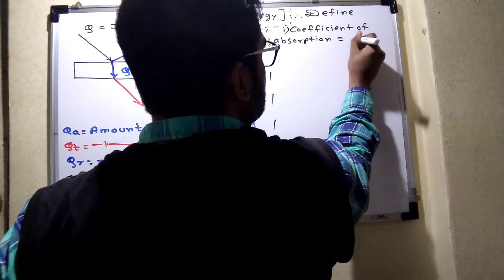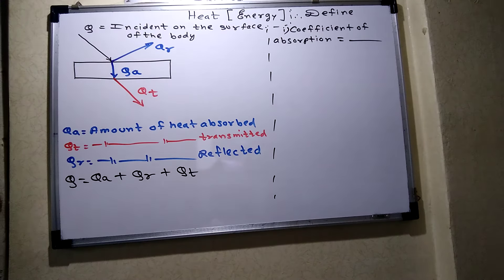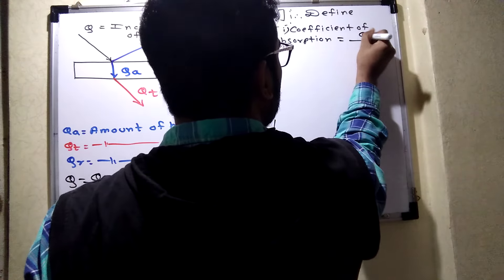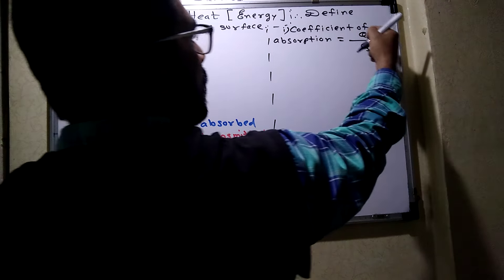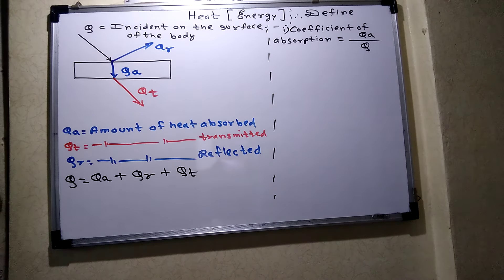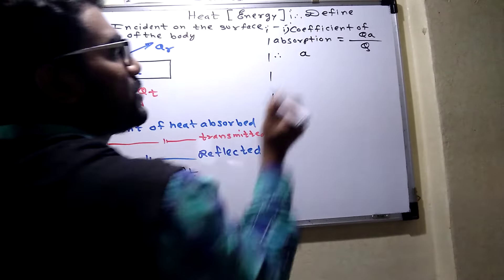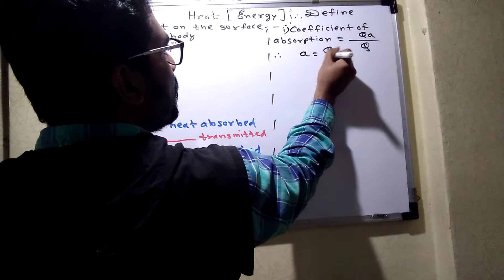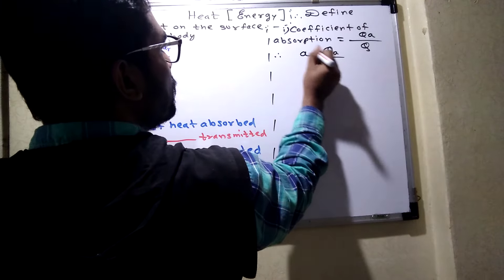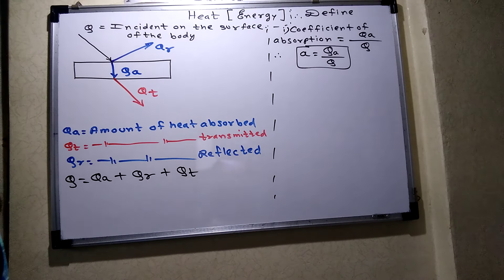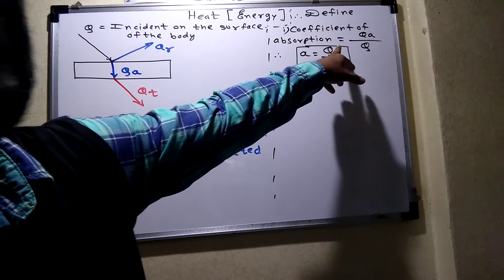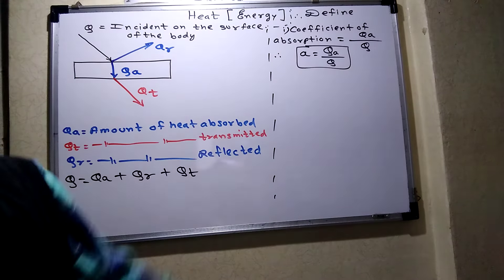The coefficient of absorption is defined as the ratio of amount of heat absorbed to the total amount of heat incident. The symbol for coefficient of absorption is 'a', given by Qa upon Q.